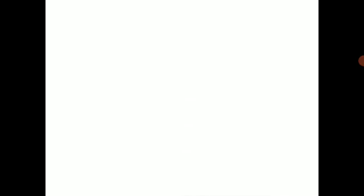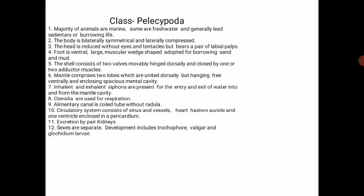The ctenidia are useful for the process of respiration. The alimentary canal is a coiled tube without a radula. The circulatory system consists of sinuses and vessels. The heart has two auricles and one ventricle and is enclosed in a pericardium.